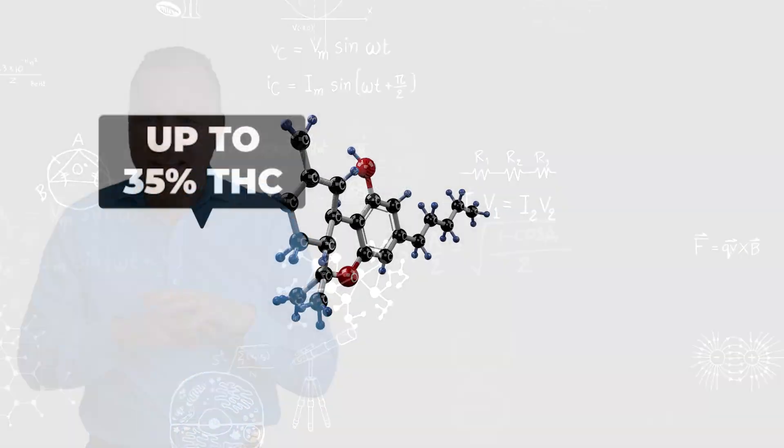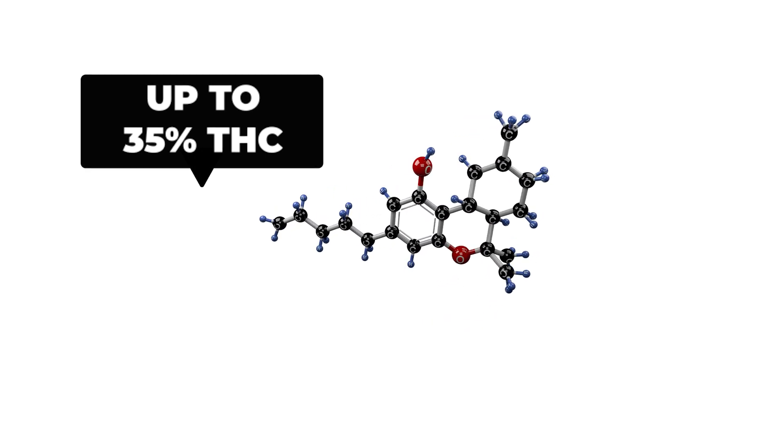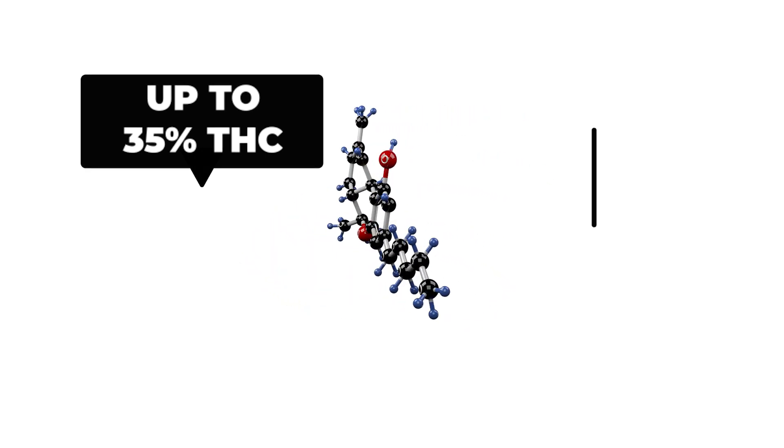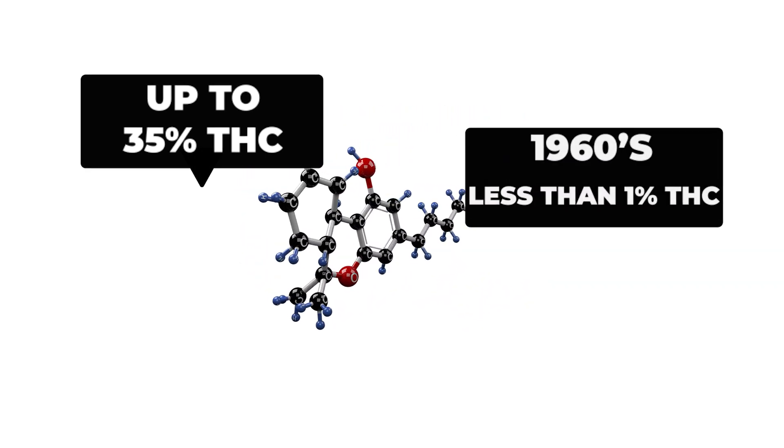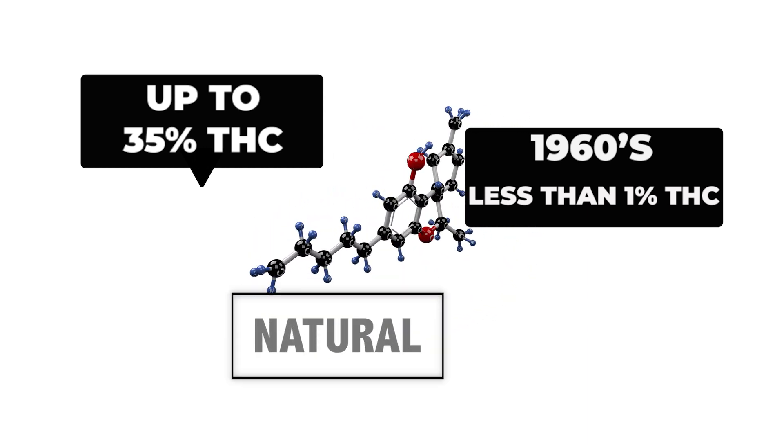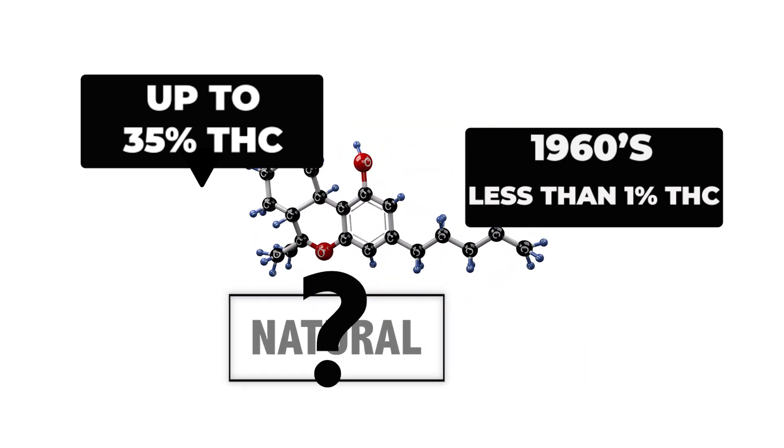In fact, marijuana is a plant that can now contain up to 35% THC. Marijuana in the 60s contained less than 1%. So those that say that it's natural need to reread the science.